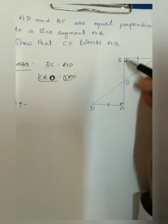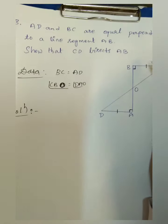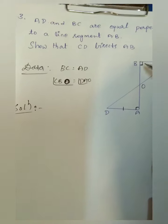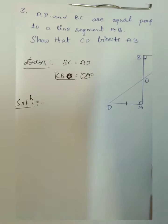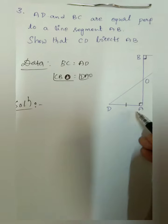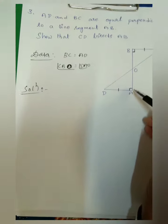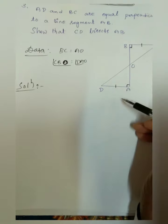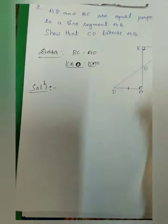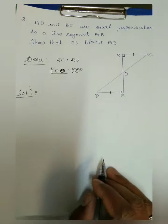Solution: Since BC and AD are perpendicular to line segment AB, triangles BOC and AOD are right-angled triangles, because one of the angles in each measures exactly 90 degrees.